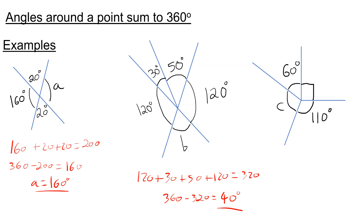Finally, to get C, the angles we know are 60, 90, and 110. We add these up to get 260. To get C, we do 360 take away 260, which is 100. So C is 100 degrees.